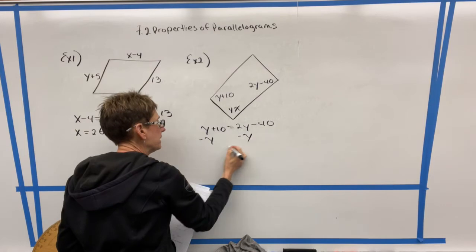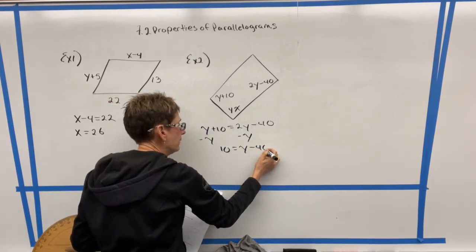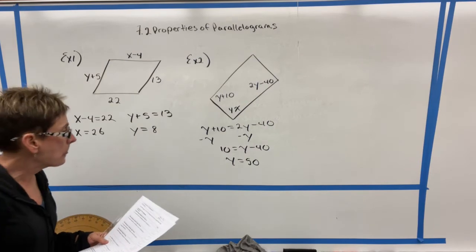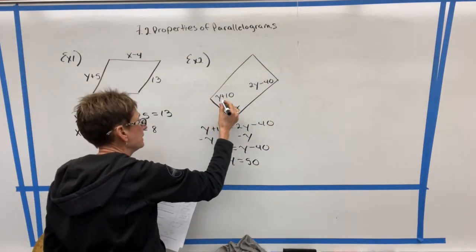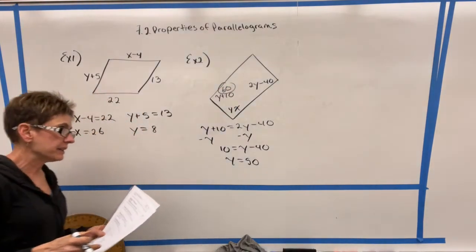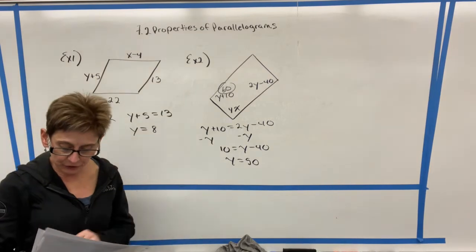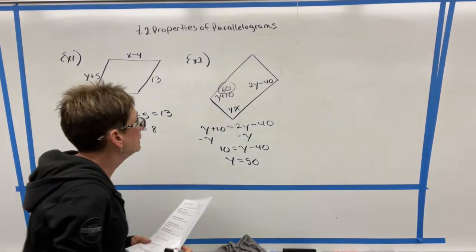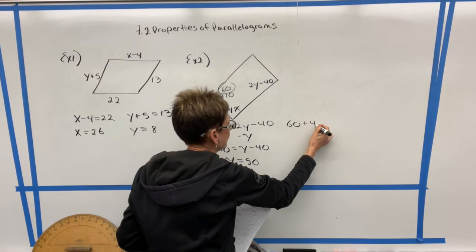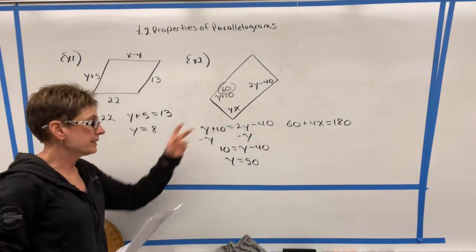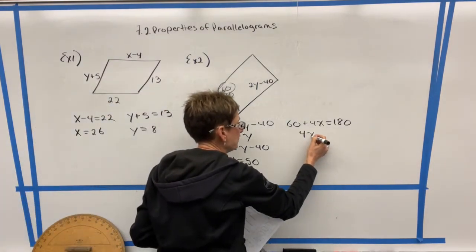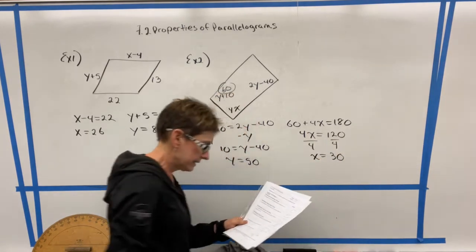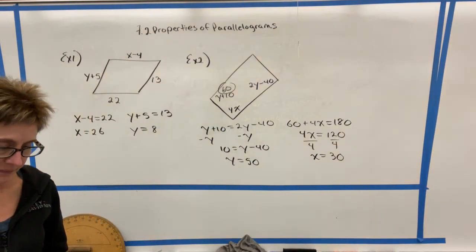Then we can subtract Y from each side and add 40 to get that Y is 50. So that's how we can solve for Y. Once we find out that Y is 50, then we can plug it back in here. 50 plus 10 is 60. So I know that that angle is 60 degrees. Then I can use another feature of parallelograms, and that is that the consecutive interior angles add up to 180. So I know that 60 plus 4X has to equal 180. These are consecutive interior angles. If I subtract 60 from each side, I get 4X is 120. And when I divide by 4, I get that X is 30.